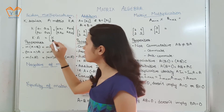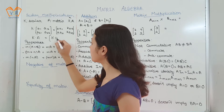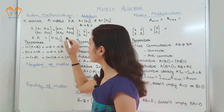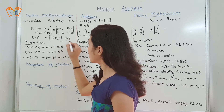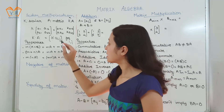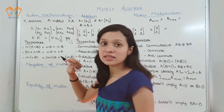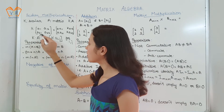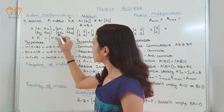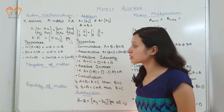In scalar multiplication, that scalar quantity is multiplied with every element in the matrix for all i,j. Let us consider this as a matrix — k multiplied to this matrix means k is multiplied to all the elements of that matrix.